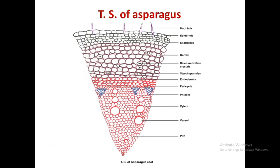Now let us see the microscopy of asparagus root. In the transverse section, the first layer is the epidermis — a single layer of elongated thin-walled cells containing a few root hairs which originate from the epidermis.